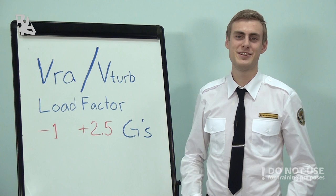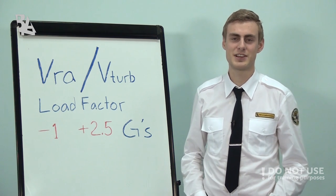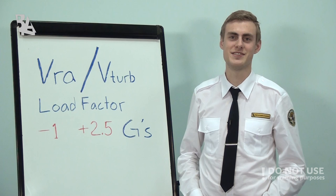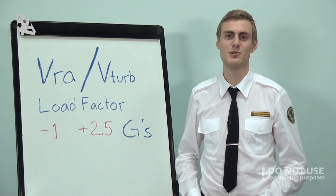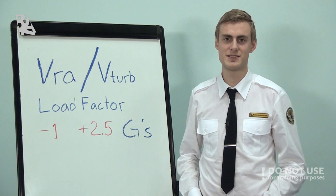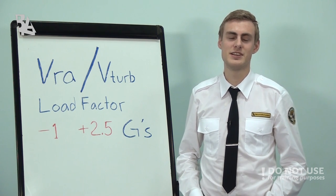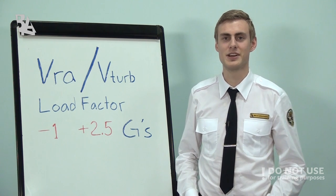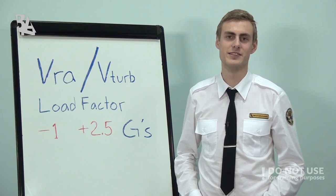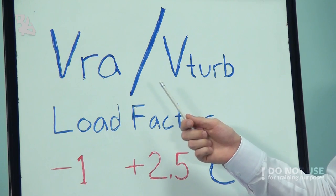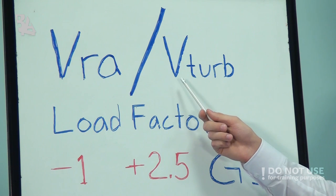We have different kinds of turbulence. Cumulonimbus clouds can be very turbulent even in the vicinity. We also have something called CAT, or clear air turbulence. If severe turbulence is encountered or expected, we have procedures to follow and a safe V speed called VRA, or sometimes V turbulence.